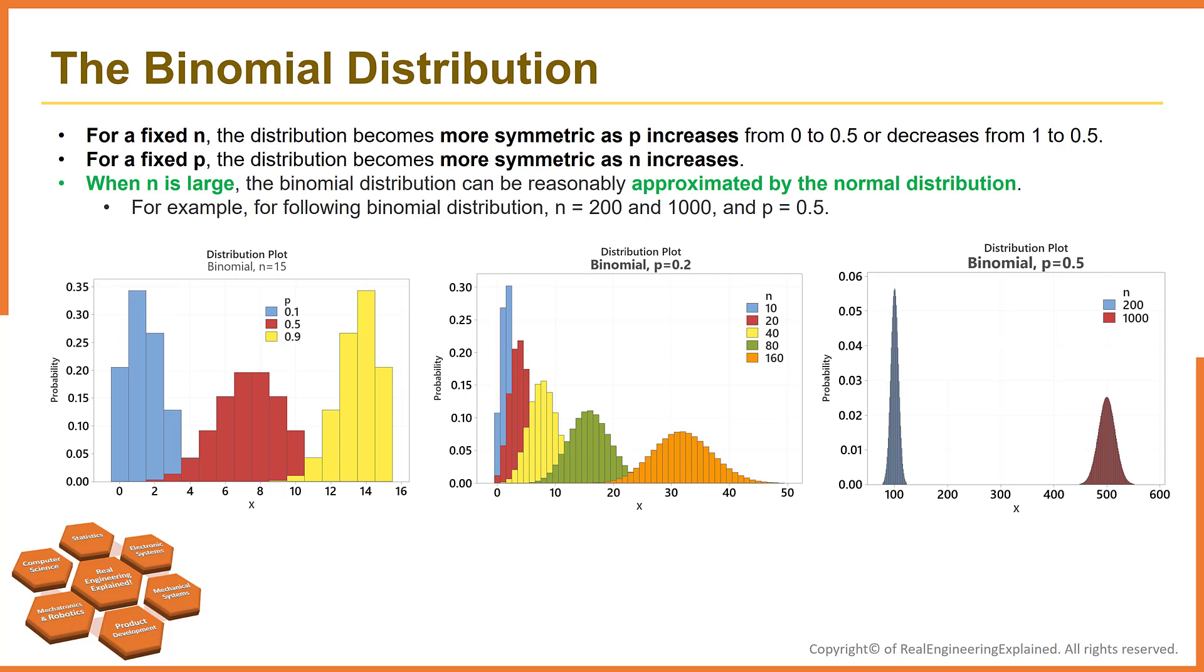One of the properties of the binomial distribution is that when n is large, the binomial distribution can be reasonably approximated by the normal distribution. For example, for the following binomial distribution, p equals to 0.5, and n for this case is 200, and for this case is 1000 trials. In both cases, the binomial distribution can be approximated by the normal distribution.